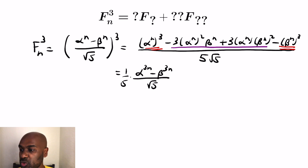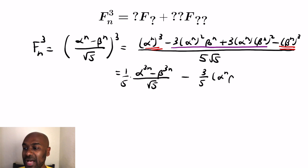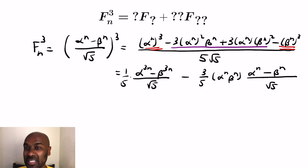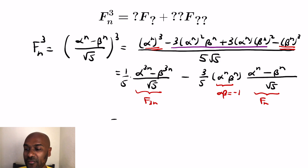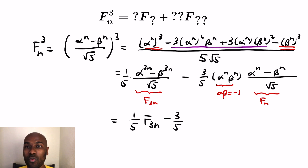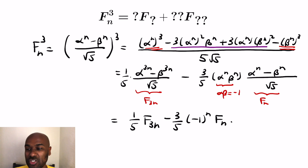Then we have the other terms. We can factor out a 3, with a 5 in the denominator, and both remaining terms have a common factor of alpha^n · beta^n. We'll have a √5 in the denominator and the factor that's left is (alpha^n − beta^n). So now we're seeing copies of Fibonacci numbers with different indices: F_(3n) and F_n itself. Since alpha times beta equals negative 1, putting it all together we get (1/5)·F_(3n) minus (3/5)·(−1)^n · F_n. So a cube of a Fibonacci number is a linear combination of F_(3n) and F_n.